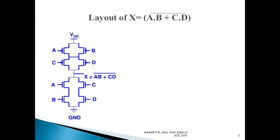The pull-down network consists of nMOS transistors. For nMOS transistors, for dot operation, nMOS transistors are connected in series. Hence, a.b, which is a dot operation, nMOS transistors are connected in series. c.d, which is a dot operation, nMOS transistors are also connected in series. Whereas between these two combinations a.b and c.d, we have a plus operation, and for plus operation nMOS transistors are connected in parallel. Hence, the series combination of a.b is connected in parallel with the series combination of c.d. This is how we draw the circuit diagram for any given Boolean expression.